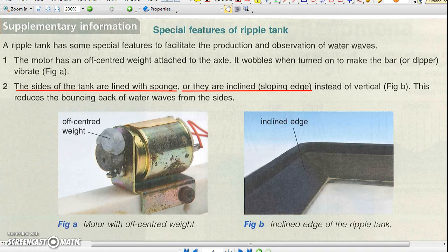To reduce the reflection of water waves from the edges, the edges are inclined or lined with sponge.